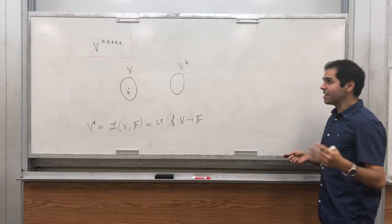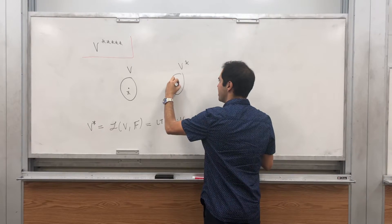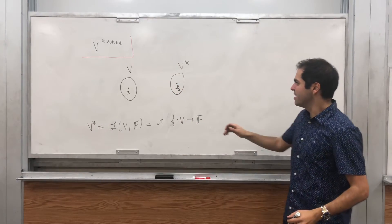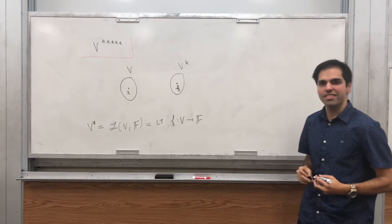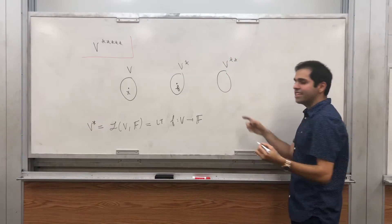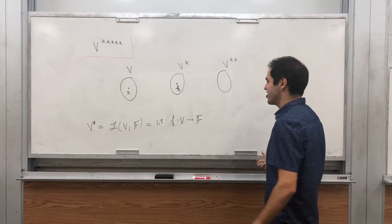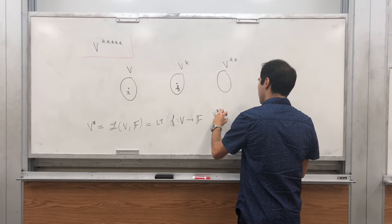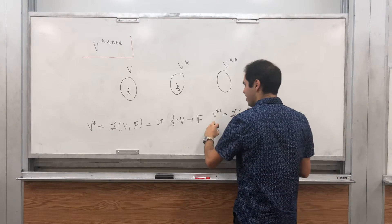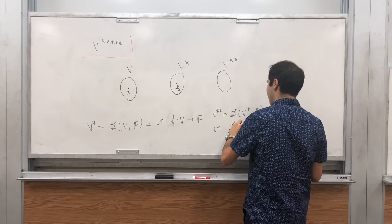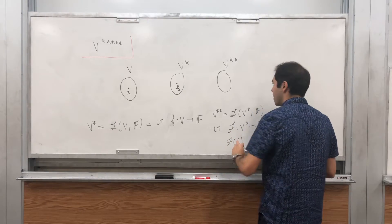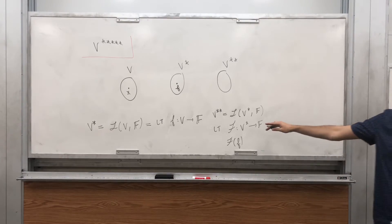In particular, in V we have the vectors like X, and in V star we have linear transformations called F. In particular, it makes sense to say F of X because the inputs of F are vectors in V. Then in V double star, technically those should be functionals of functionals. V double star is a set of linear transformations from V star to F.